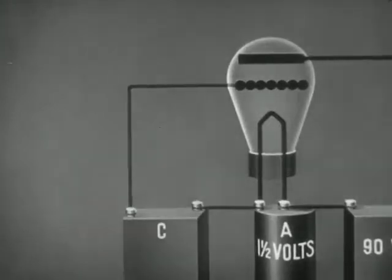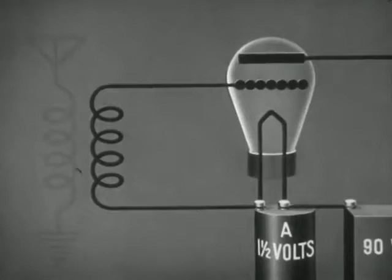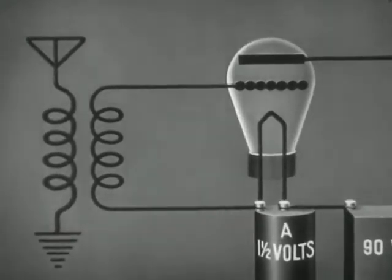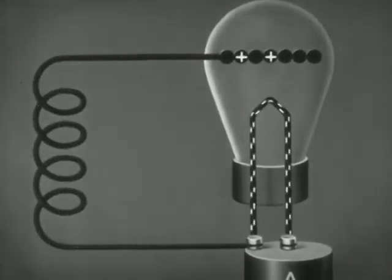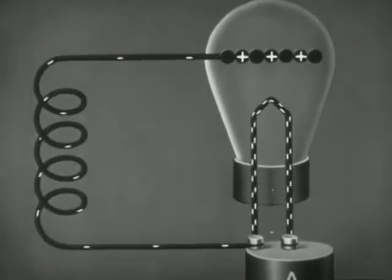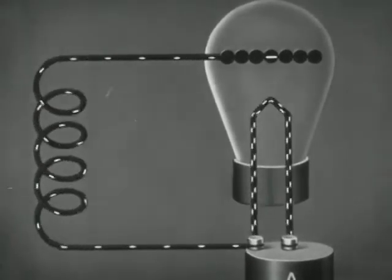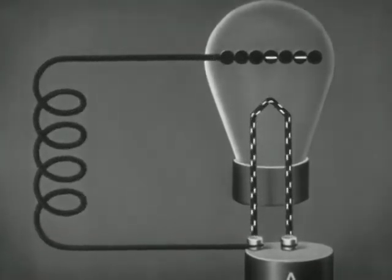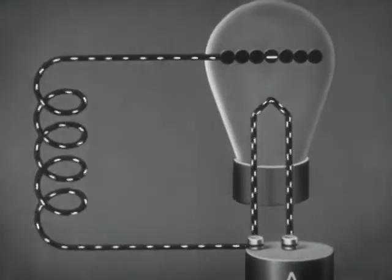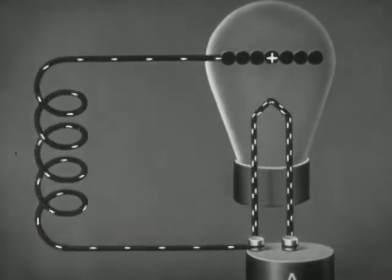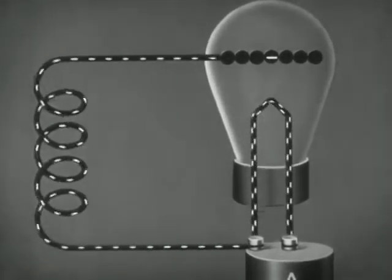Now let us connect the grid and the filament to the secondary coil of a transformer whose primary is connected to an aerial. The current in the coil is a high frequency alternating current. When electrons flow off the grid, the grid becomes more positive with respect to the filament. When the current reverses and electrons flow onto the grid, the grid becomes more negative. Thus, the charge on the grid will change at the same frequency as the radio frequency current.